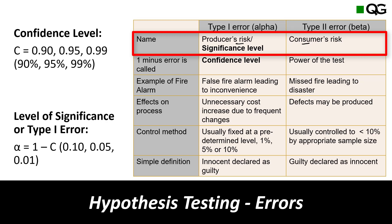In acceptance sampling, a Type 1 error (false alarm) occurs when the sample happens to have many defective pieces just due to sampling variation, causing the whole good lot to be rejected. This is the producer's risk — the lot was good but got rejected and the producer loses money. Type 2 error is when the lot is actually bad but the sample picked was all good, so the entire bad lot gets accepted — causing loss for the consumer. This is consumer's risk.